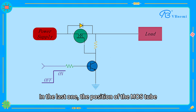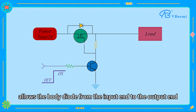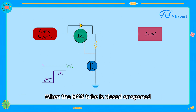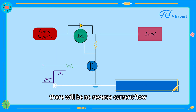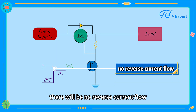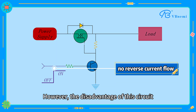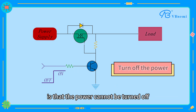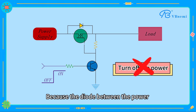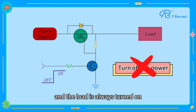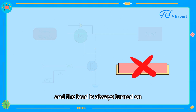The third method positions the MOSFET so its body diode faces from the input end to the output end. Whether the MOSFET is closed or open, there will be no reverse current flow. However, the disadvantage of this circuit is that the power cannot be turned off, because the diode between the power and the load is always conducting.